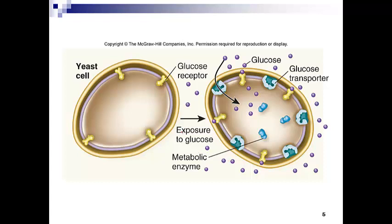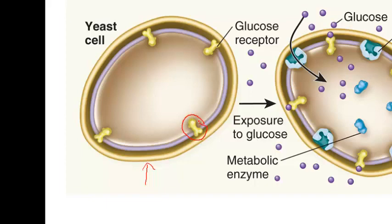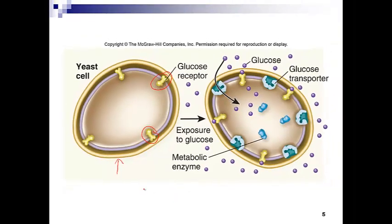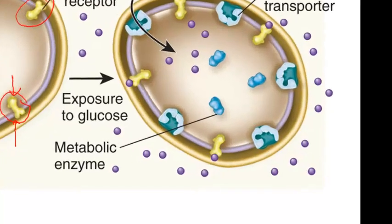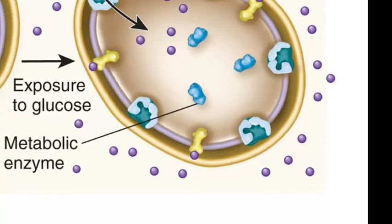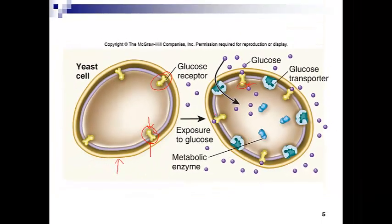Here we have a glucose receptor on the surface of a yeast cell embedded within the cell membrane. It's important to note that because it's a fungi, yeast do have a cell wall, but cell walls are not impermeable — they're permeable. When glucose becomes available, those receptors are bound. Notice that this glucose receptor is an integral membrane protein — it has an extracellular domain and an intracellular domain. When the extracellular domain binds glucose, a conformational change occurs, transmitting that change to the inside of the cell. That domain of the protein then causes a cellular response: initiating the production of glucose transporters as well as the metabolic enzymes critical for storing and utilizing glucose for energy production.